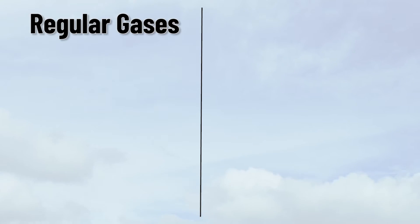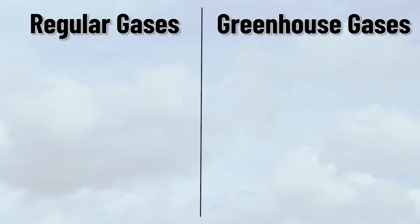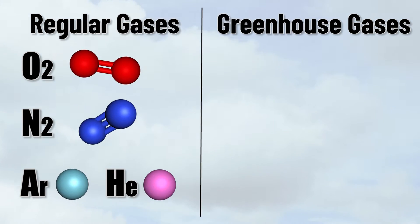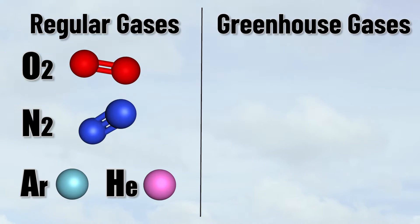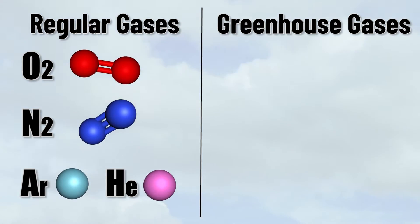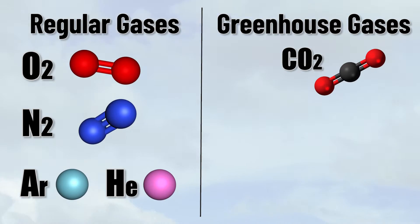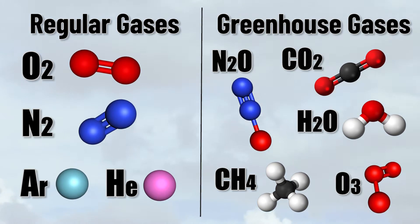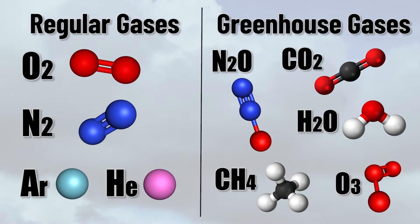So what do these gases have that oxygen and nitrogen do not? Well, the answer lies in their molecular structure. So let's compare some regular gases with greenhouse gases. In the regular gases column, we can put oxygen, nitrogen, argon and helium. As you can see, both oxygen and nitrogen are molecules made of two identical atoms, while argon and helium exist only as single atoms. In the greenhouse gas column, we can put carbon dioxide, water vapour, nitrous oxide, methane and ozone. Once again, there are some clear similarities, but what is it that makes greenhouse gases different?